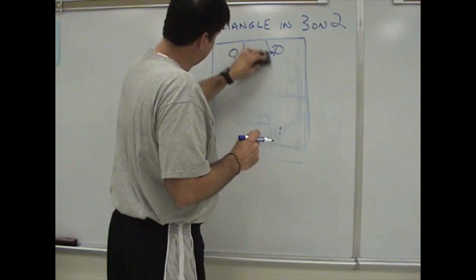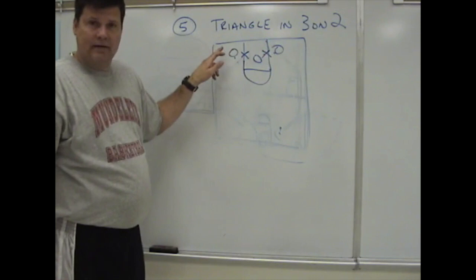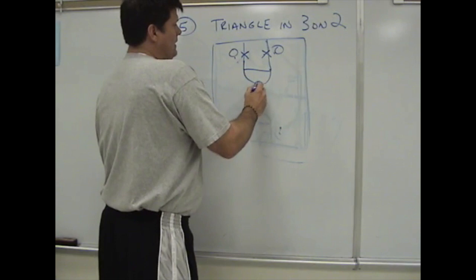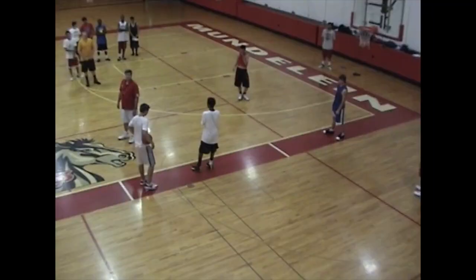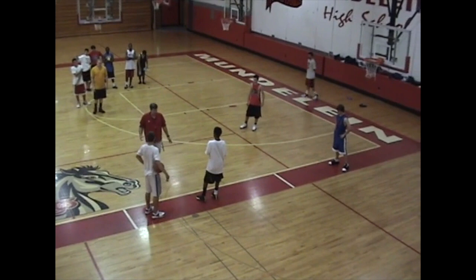If this guy forgets to stop at the free throw line area and he sinks down here, now we have a defender here and a defender there, and we have two guys stopping three. So it's important to form that triangle, be out in this area here. Because if I form a triangle here, two people can't defend three.